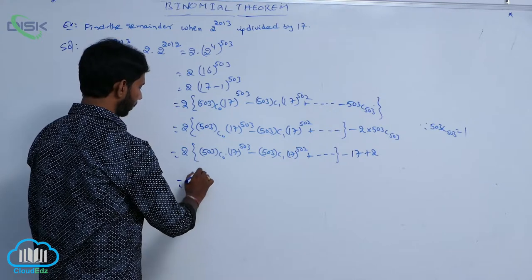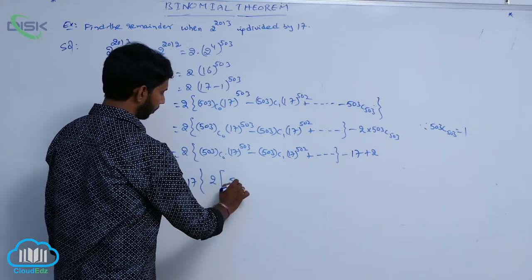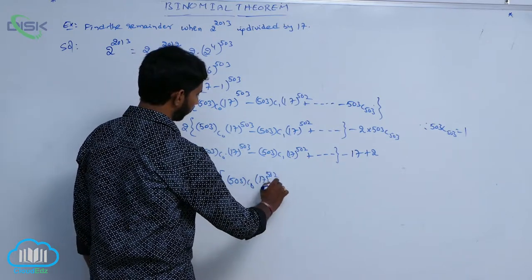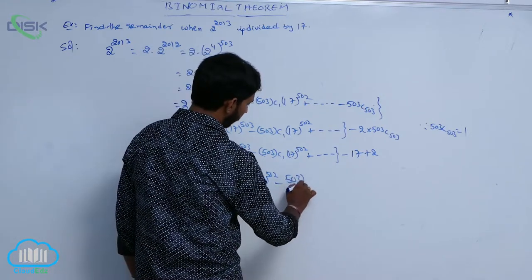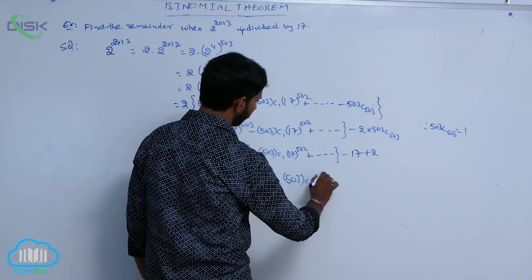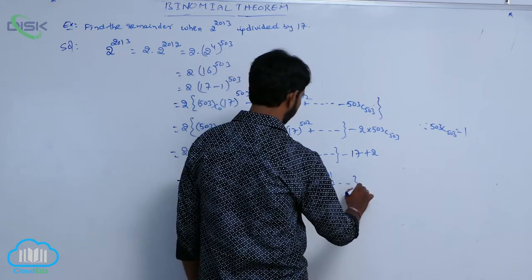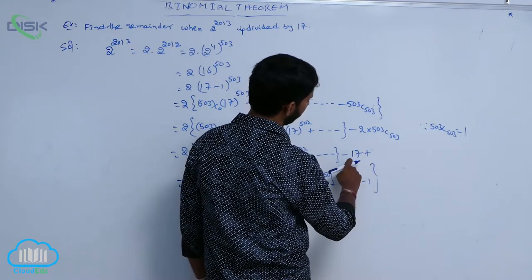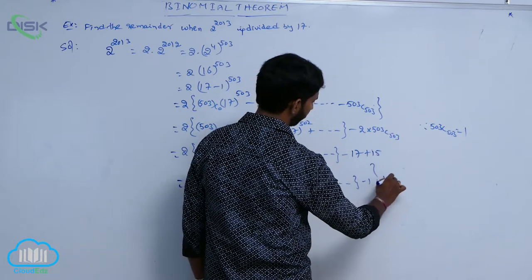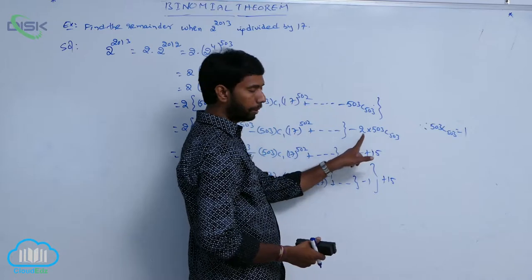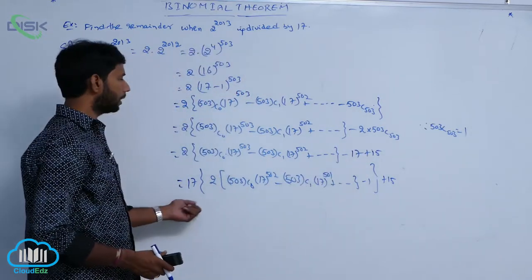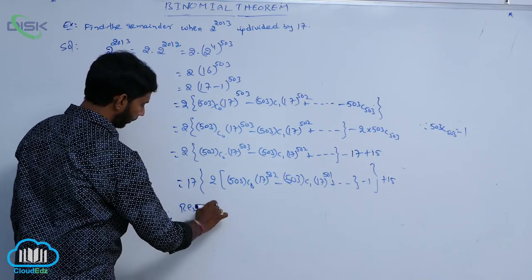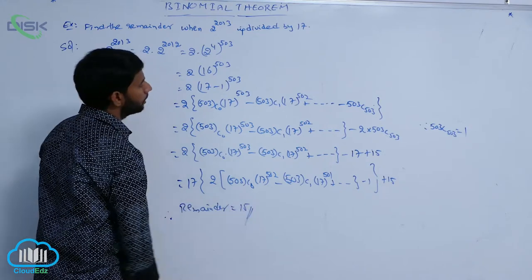17 is a common factor in all terms except the last. The total becomes 17 times (some integer) minus 2. Since minus 2 can be written as minus 17 plus 15, this is always divisible by 17 and its remainder is equal to 15.